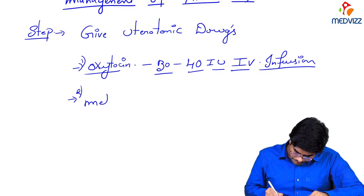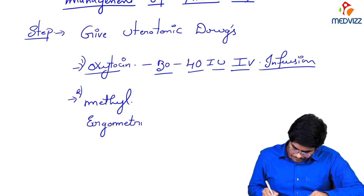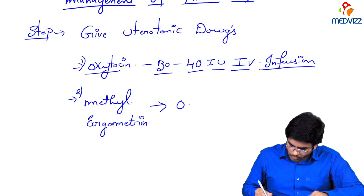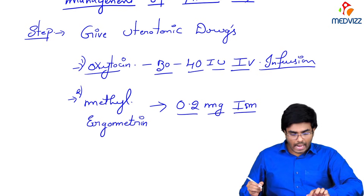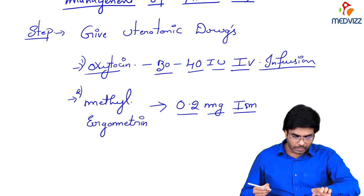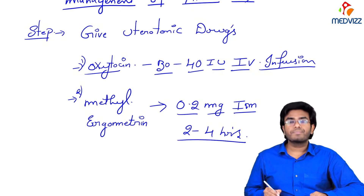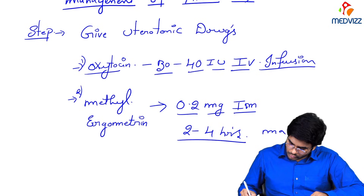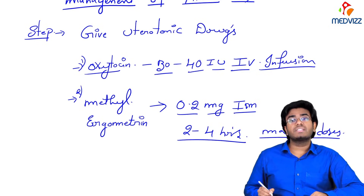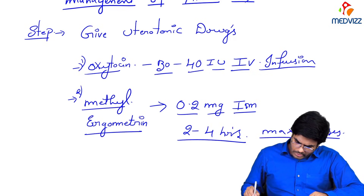Give methyl ergometrin 0.2 mg IM. You can give a maximum of five doses of methyl ergometrin 0.2 mg IM.